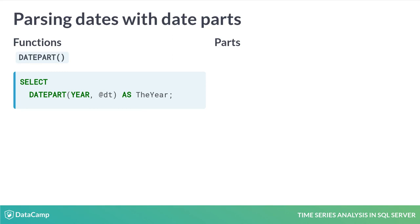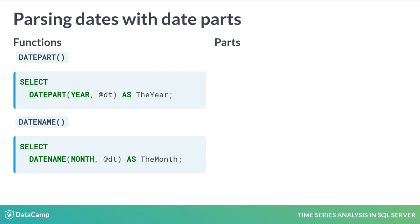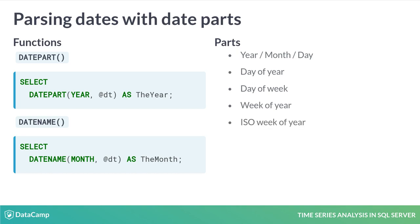By contrast, DateName gives us a string value, important if we want to know the name of the month. These functions can shred a date into a number of component parts. We can get the year, month, and day like the standalone functions. We can also get the day of the year, or the day of the week. We can get the week of the year, or the ISO week of the year, a format which is used mostly in Europe.